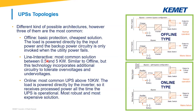The second type of architecture is the line-interactive. This is the most common solution between 0.5 and 5 kilowatt. It's really similar to the offline topology, but also incorporates additional circuitry to tolerate over-voltages and under-voltages, so the load is in some way protected from those input power conditions. Finally, we have the online topology, which is the most common UPS architecture above 10 kilowatt. The load is always powered directly by the inverter, so it receives processed power all the time the UPS is operational. This can be considered the most robust and most expensive solution.